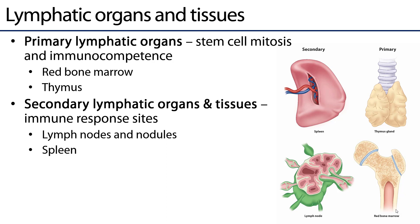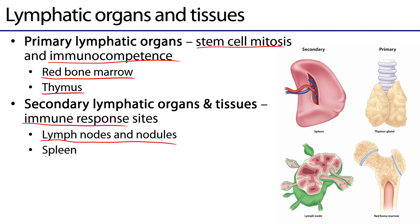There are two basic types of lymphatic organs and tissues. There are primary lymphatic organs, and these are sites of lymphocyte development and maturation — both stem cell mitosis for lymphocytes and immunocompetence, which is the process of the lymphocyte maturing. These two organs are red bone marrow and the thymus gland. Then there are secondary lymphatic organs and tissues, which are areas where immune responses are carried out, including lymph nodes, nodules, and the spleen.